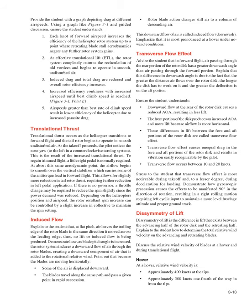Translational thrust: occurs as the helicopter transitions to forward flight and the tail rotor begins to operate in smooth, undisturbed air. As the takeoff proceeds, the pilot notices the nose yaw to the left (in a counterclockwise turning system) — the result of increased translational thrust. To regain trimmed flight, a little right pedal is normally required. At about this same aerodynamic point, the airflow begins to smooth over the vertical stabilizer, which carries some of the anti-torque load in forward flight, allowing for slightly more reduction in tail rotor thrust. Depending on the helicopter's position and airspeed, the rotor resultant RPM increase can be controlled by a slight increase in collective to maintain the RPM setting.